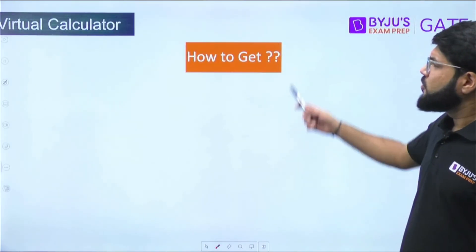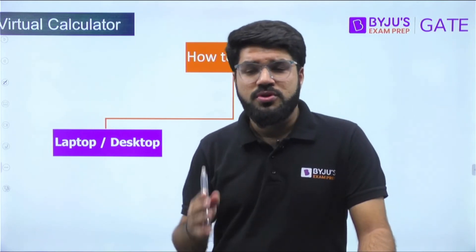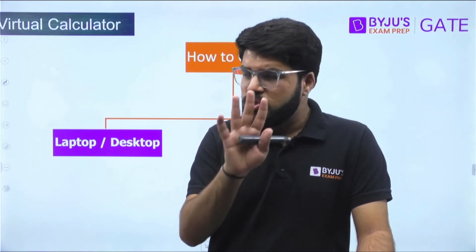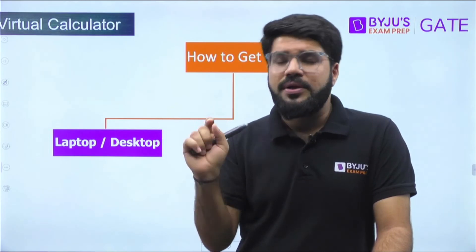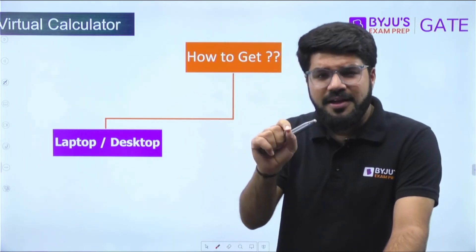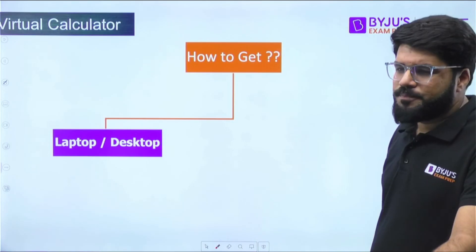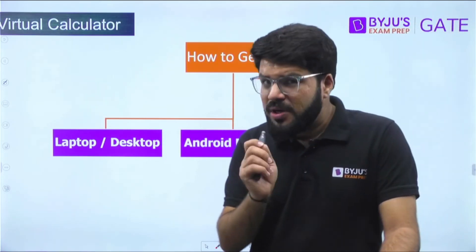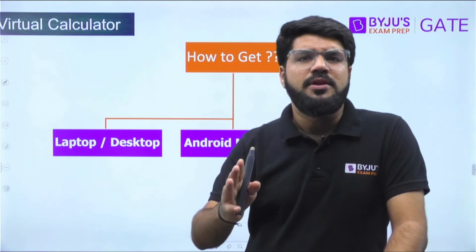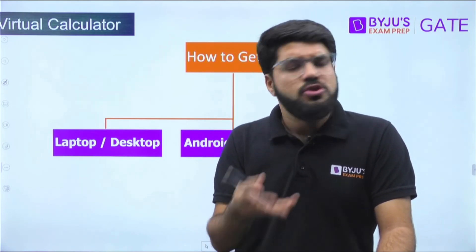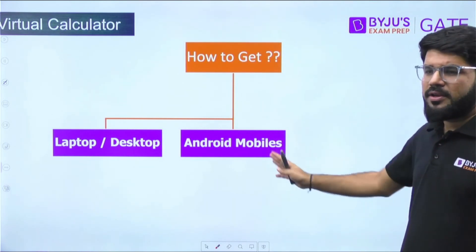To practice on the virtual calculator during your study time: if you are on a laptop or desktop, open Google and type 'GATE virtual calculator' — you'll get the first link by TCS, which designed this calculator for GATE. Click it and you get the exact same virtual calculator. If you're on Android mobile, go to the Google Play Store, search 'GATE virtual calculator', and download the app. Note: it is currently not available for iPhone users.